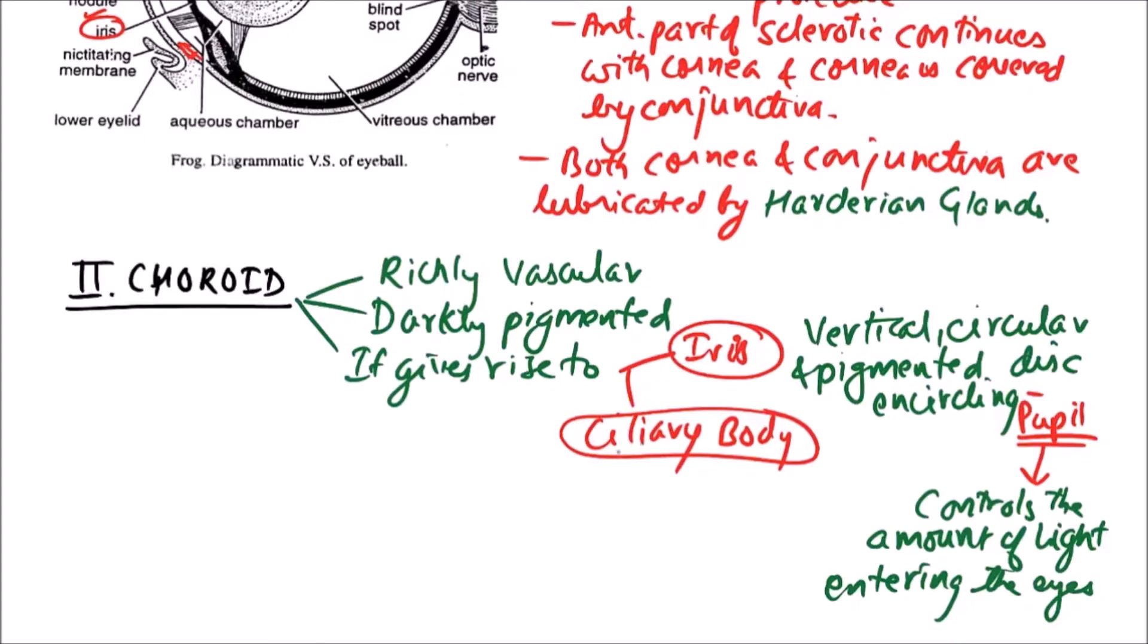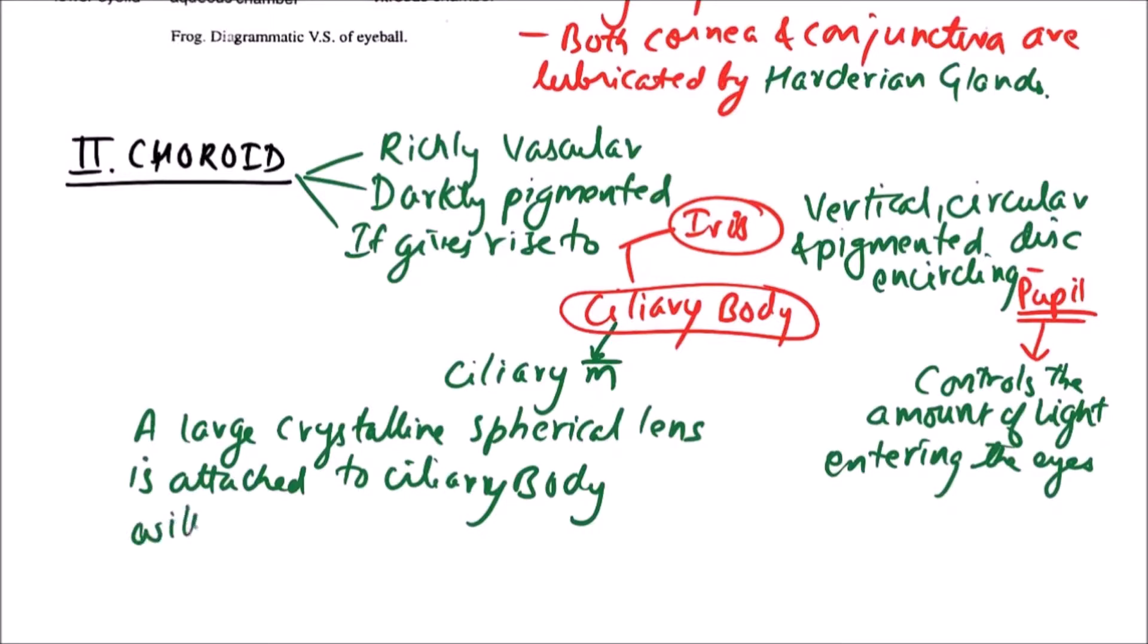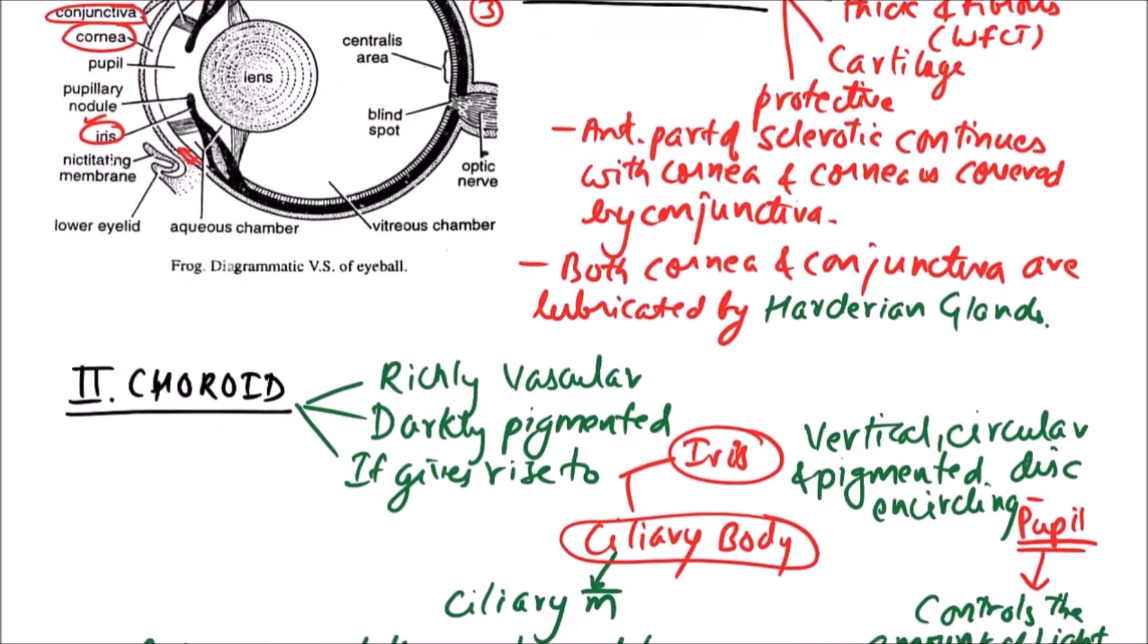Next is ciliary body. Ciliary body is having ciliary muscles and a large crystalline spherical lens is attached to ciliary body with the help of suspensory ligaments. We can observe these are the suspensory ligaments and this is the ciliary body having the ciliary muscles.